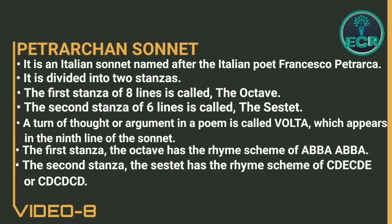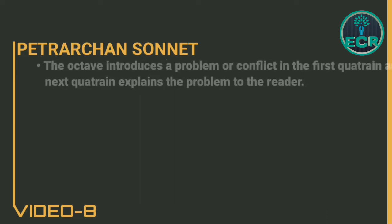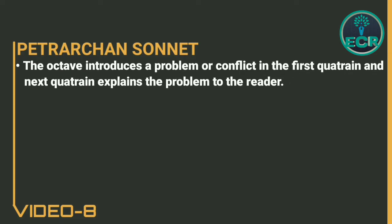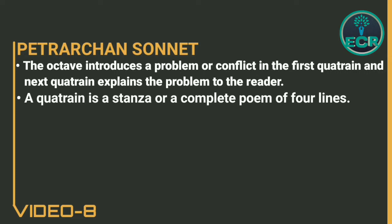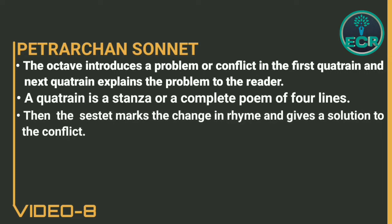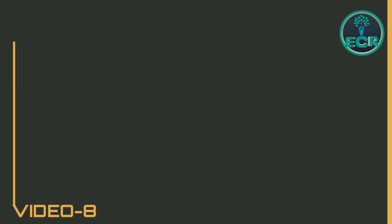The second stanza, the sestet, has rhyme scheme of CDE CDE or CD CD CD. The octave introduces a problem or conflict in the first quatrain and next quatrain and explains the problem to the reader. A quatrain is a stanza or a complete poem of four lines. Then the sestet marks the change in rhyme and gives a solution to the conflict.